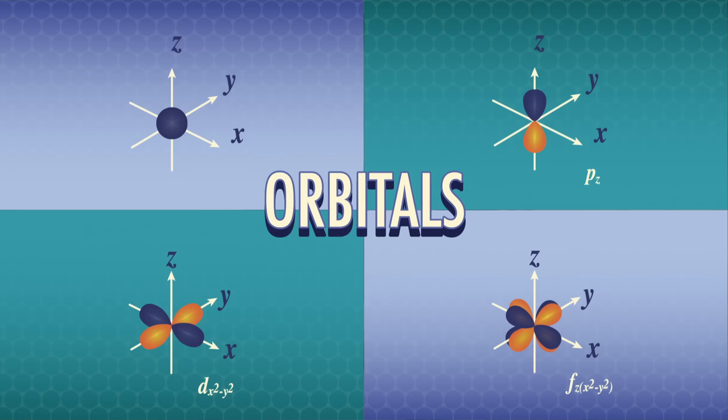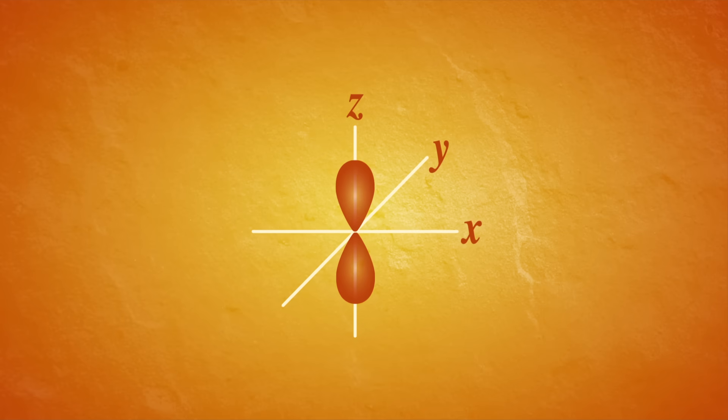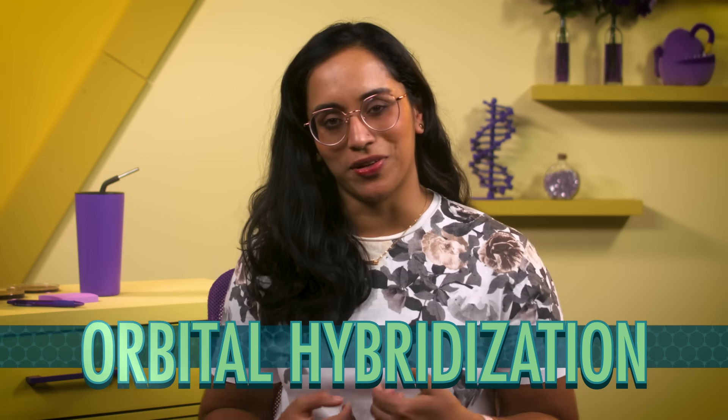As scientists started to widely accept VSEPR as a way to explain the molecular shapes they saw experimentally, quantum theory became a thing — and so did the idea of orbitals, places where we're most likely to find electrons around atoms. There are four distinct atomic orbital names and shapes: S, P, D, and F. Because of how orbitals are positioned, even orbitals couldn't completely explain the 3D shapes predicted by VSEPR and observed experimentally. Something was still missing.